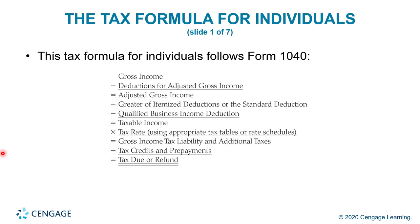The tax formula is very important — make a copy of this slide or write this information down so you can refer to it whenever you need to calculate problems in this chapter. The tax formula for individuals follows Form 1040. You start with gross income, less deductions for adjusted gross income, to arrive at adjusted gross income. Then subtract the greater of itemized deductions or your standard deduction, less the qualified business income deduction, to get taxable income. That is multiplied by the tax rate using appropriate tax tables or rate schedules, giving you gross tax liability plus additional taxes. Less tax credits or prepayments gives you a total tax due or your refund.